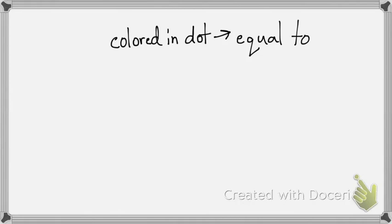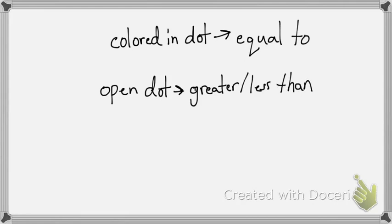So that's the other thing I want to write down now, is that a colored in dot means it can be equal to. If it's an open dot, or like it's not colored in, then that means it's only going to be greater than or less than. It's not going to be equal.